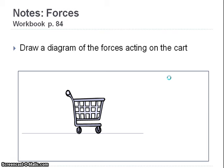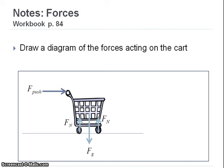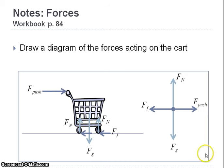If we draw a diagram of the forces on that cart, we'd show the force of gravity pulling down, the normal force from the surface acting upward on the wheels, the force of your push in the forward direction, and friction acting backward. In a free body diagram, all of these forces are balanced. The cart moves at a constant speed with no acceleration in either the horizontal or vertical direction.